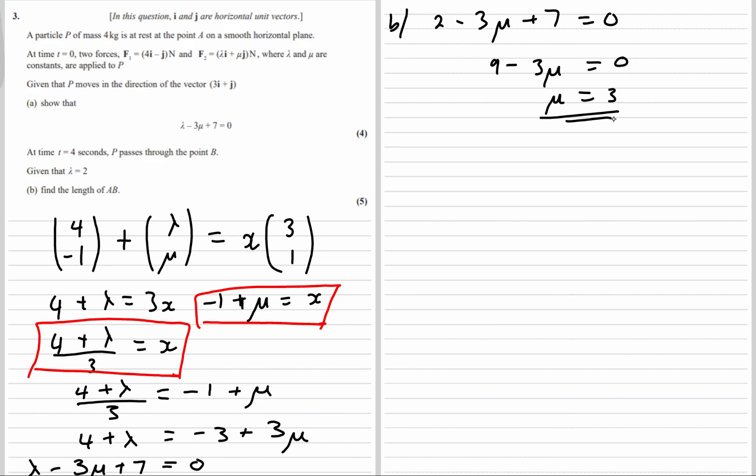So now we know the resultant force. The overall force F, the resultant force is 4 plus lambda, which is 4 plus 2, which is 6i. And we've got negative 1 plus mu, negative 1 plus 3 is 2. So 6i plus 2j. That's the force that's acting on the particle.